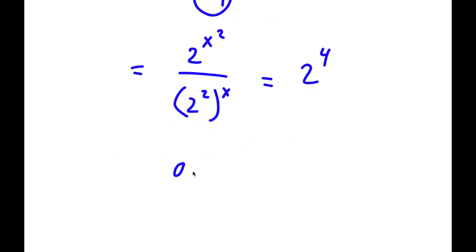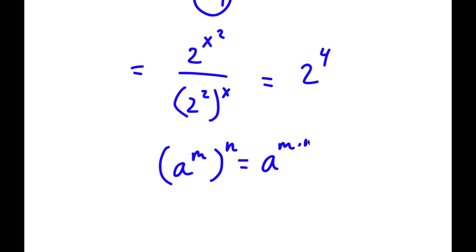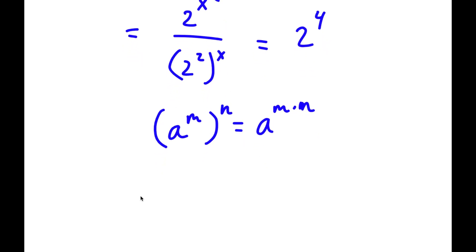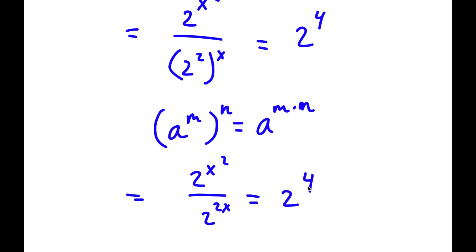Using the rule that a to the power of m to the power of n equals a to the power of m times n, (2 squared) to the power of x becomes 2 to the power of 2x. So now I have 2 to the power of x squared over 2 to the power of 2x equals 2 to the power of 4.